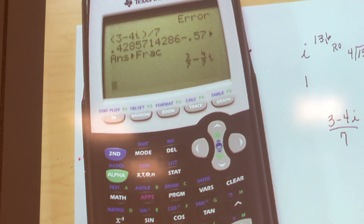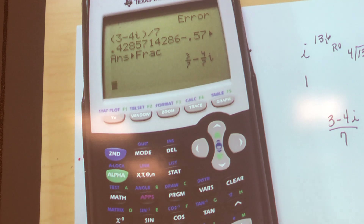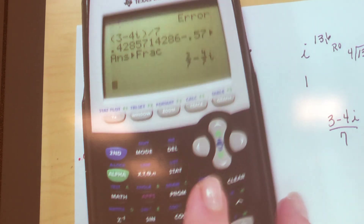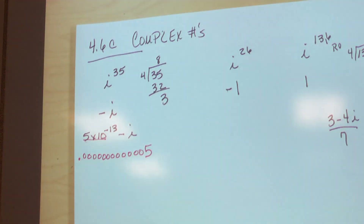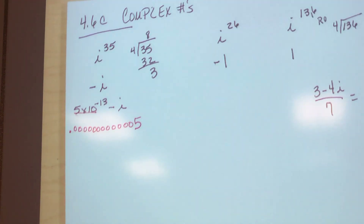You just saw me try to put (3 minus 4i) on the top of the fraction and 7 on the bottom and the calculator said no. Sometimes you just have to work with your calculator. Anybody got a question? Everybody good with that?